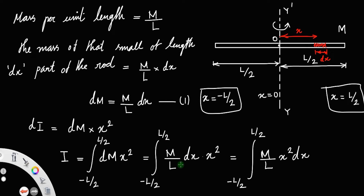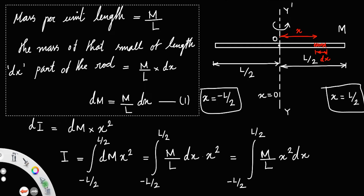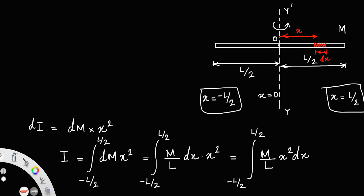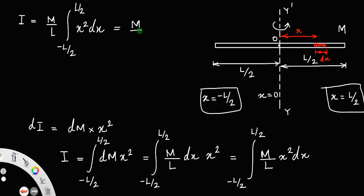The total moment of inertia about the axis is: since m/l is a constant, we take it outside the integral sign. So I = (m/l) times the integral from -l/2 to l/2 of x²·dx. The integral of x² is x³/3. Now we substitute the upper and lower limits.